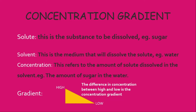Now we need to look at concentration and gradient. Concentration refers to the amount of a solute that is dissolved in the solvent — in this case, the amount of sugar dissolved in the water. Gradient, simply put, is a difference in concentration between high and low — where there are a lot of particles versus a small number of particles. That represents our concentration gradient.